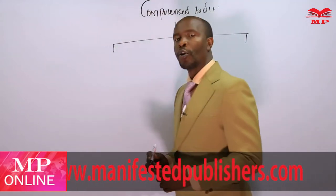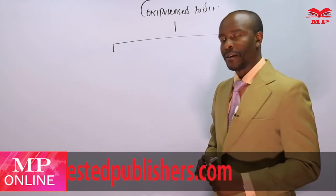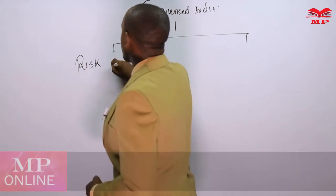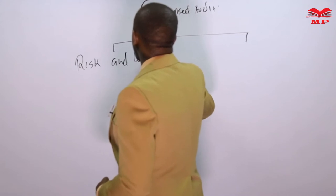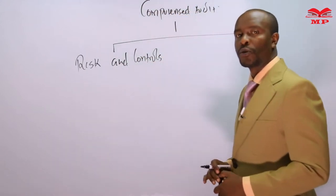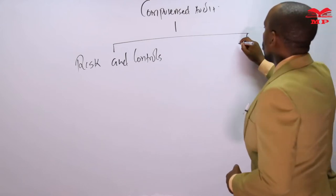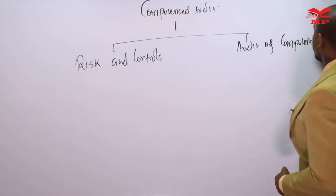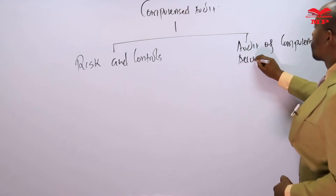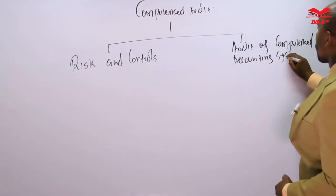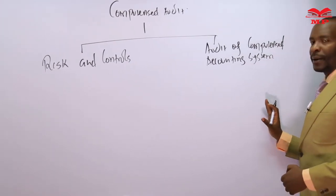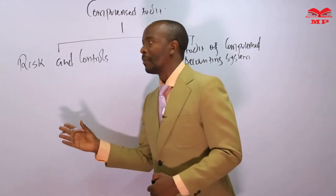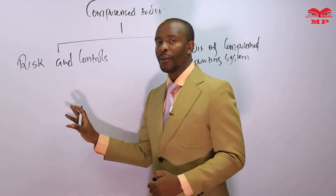The first main area is about the controls associated with computerized audit as well as the risks — what we call computer risks and controls — which we mentioned partly when introducing the internal control system. The second area is the audit of a computerized accounting system. My main lesson today is going to focus on this second part, though I'll briefly remind you of the first part so you won't have problems answering questions relating to risks.